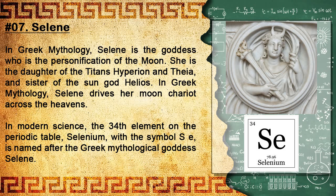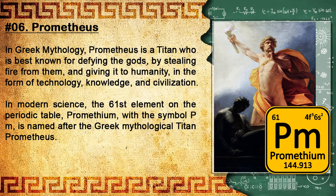Number 7: Selene. In Greek mythology, Selene is the goddess who is the personification of the moon. She is the daughter of the Titans Hyperion and Theia, and sister of the sun god Helios. Selene drives her moon chariot across the heavens. In modern science, the 34th element on the periodic table, selenium, with the symbol Se, is named after the Greek mythological goddess Selene.